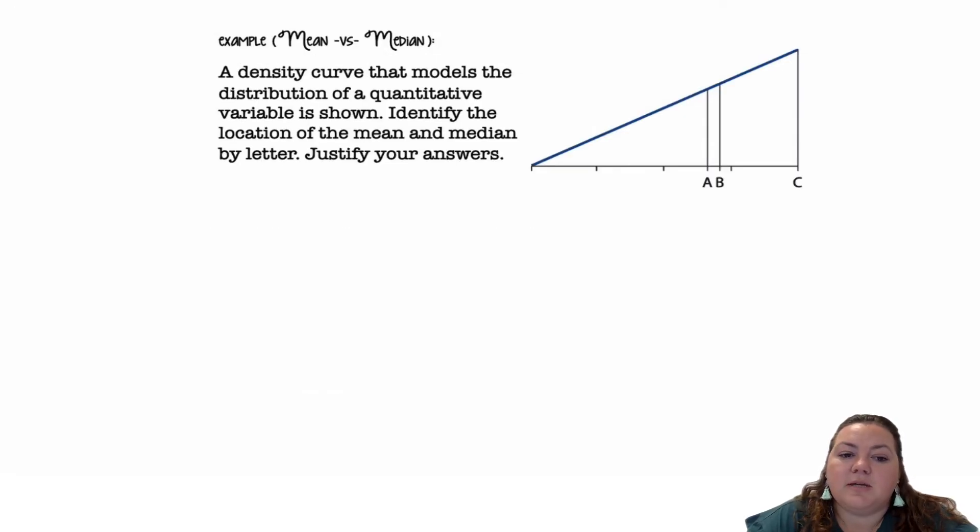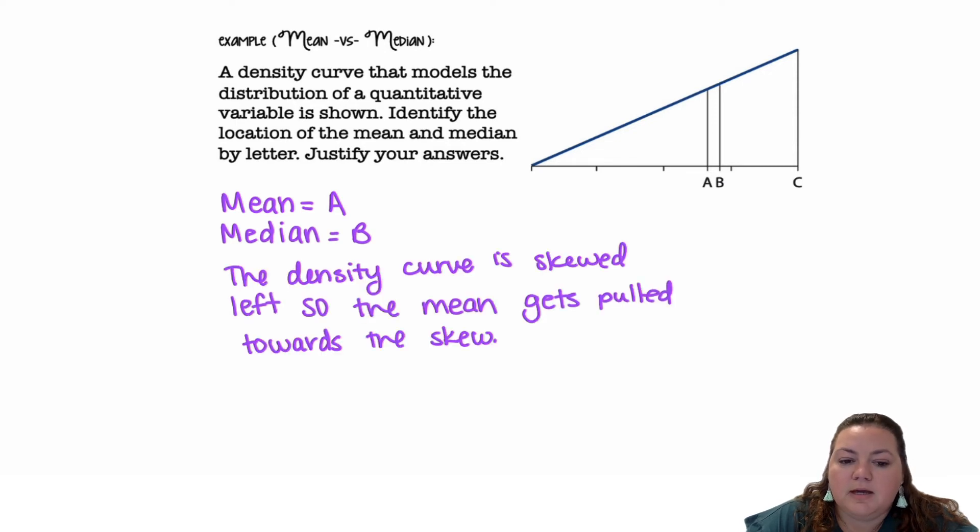Mean versus the median. A density curve that models the distribution of quantitative variables is shown. Identify the location of the mean and the median by letter. So this looks to be skewed left, which is skewed towards the lower number. So it's going to pull the mean lower. The median is resistant to outliers and skewness, but the mean is not. So the mean would be A. The median would be B. And the density curve is skewed left. So the mean gets pulled towards the skew.